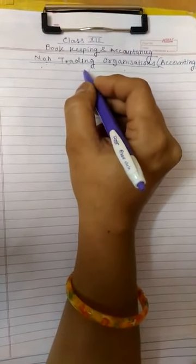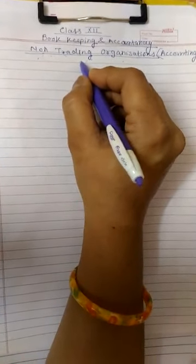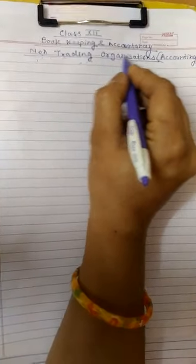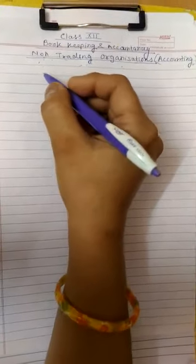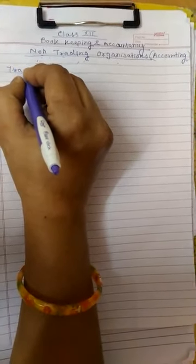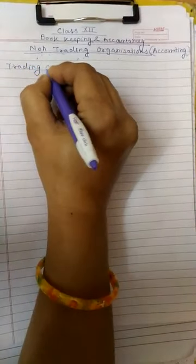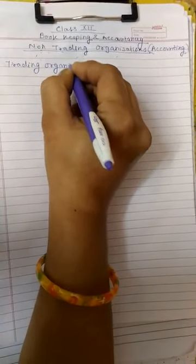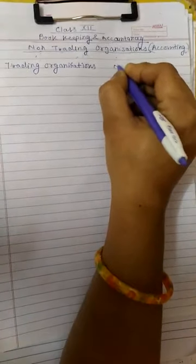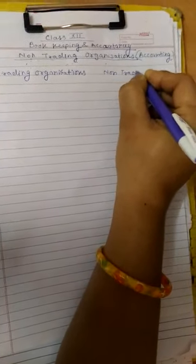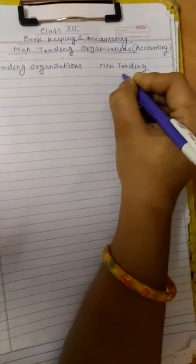First of all, we should know that the institutions or organizations can be classified in two types of categories. They are trading organization and non-trading organization.